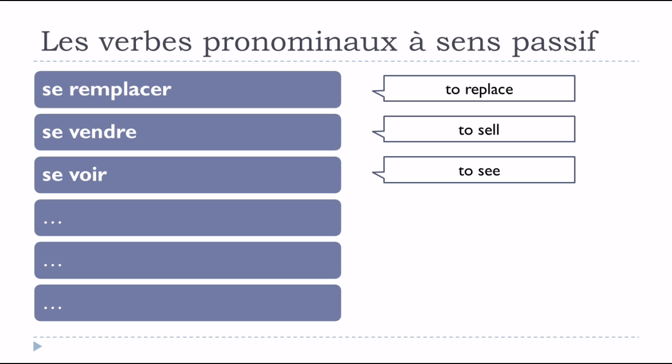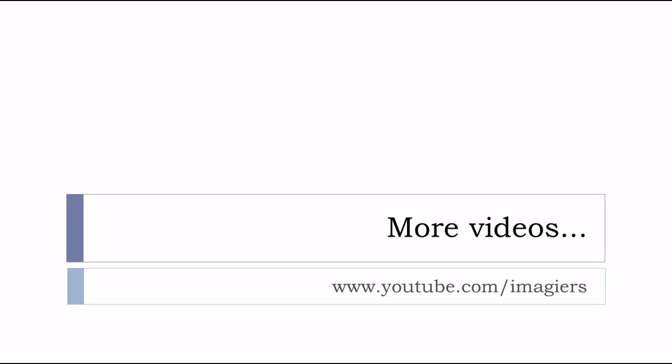And finally: se remplacer, se vendre, se voir. Remember that all the verbs presented in this video can work as verbes pronominaux à sens passif. I hope it was clear. Have a great day — au revoir et à bientôt.